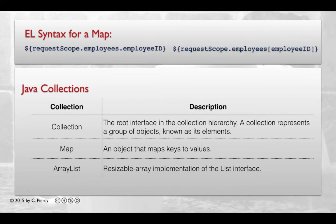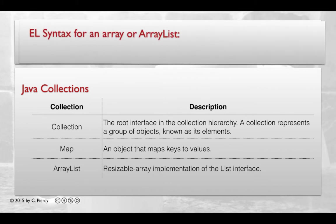With the alternative notation, and usually the one I prefer, we have requestScope, the name of the map, employees, and we provide the employee ID in square brackets to get the result in the ID. For an array list, we can access it using the square bracket notation.